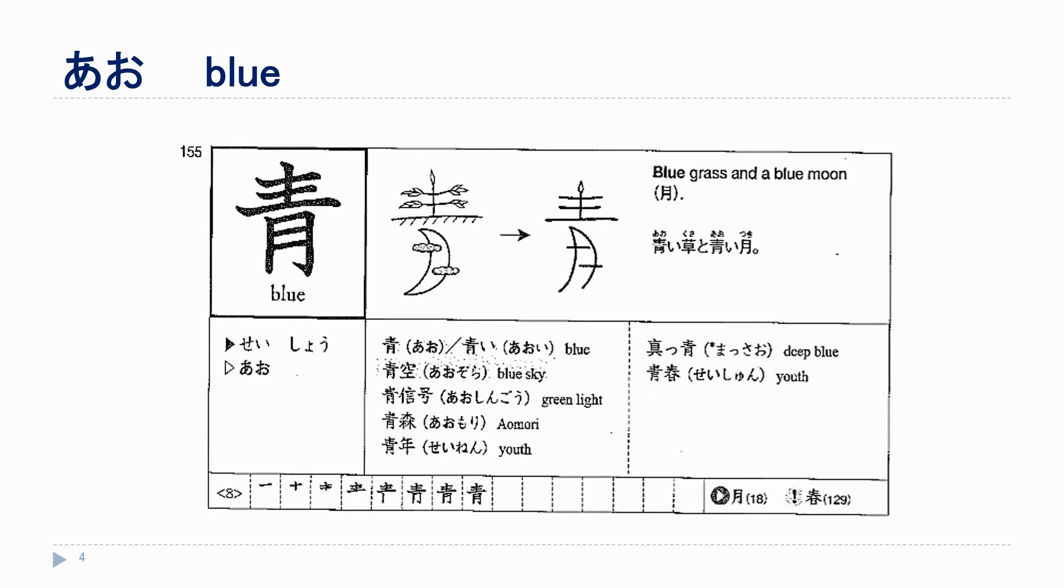The next kanji is 青 or with the い hiragana 青い. We start with いちにさんよん. This fourth stroke is the longest stroke. On the bottom here we have いちにさん yon 月曜日の月.